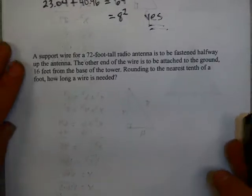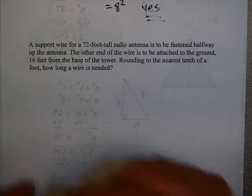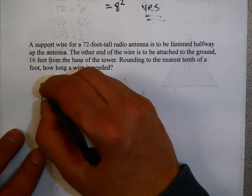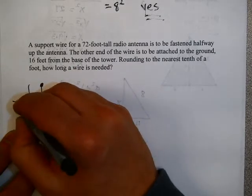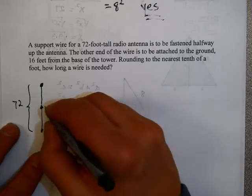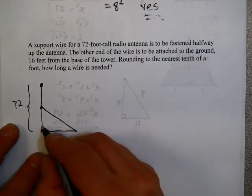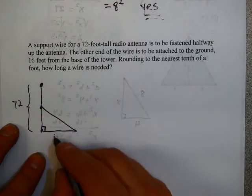Alright, a few more application problems to do. Here's one that you might see on your homework. A support wire for a 72-foot tall radio antenna is to be fastened halfway up the antenna. The other end of the wire is to be attached to the ground 16 feet from the base of the tower. Okay, I better draw a picture. Now you can see I'm not an art major. This is my tower here. And that whole thing is 72 feet. And we're going to attach a support wire halfway up. So here's my support wire. And I know that when I attach it to the ground that this hopefully is a right angle. And I know from the problem that this is 16 feet.